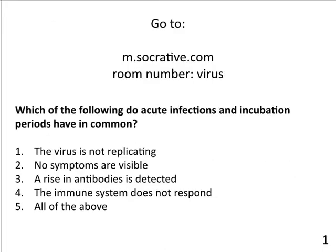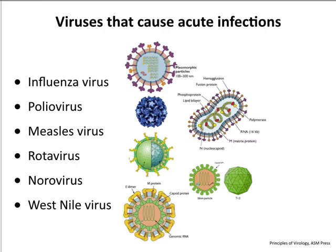The question asks: which of the following do acute infections and incubation periods have in common? The answer is number three — a rise in antibodies. Virus not replicating is clearly not true. No symptoms are visible is true for the incubation period, but in an acute infection there are symptoms, so that wouldn't be right for both. The correct answer is a rise in antibodies: in an incubation period you're starting to make an immune response, and in an acute infection you do as well.